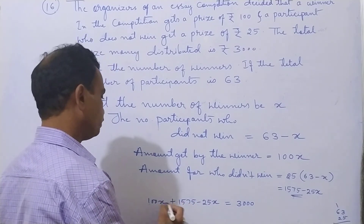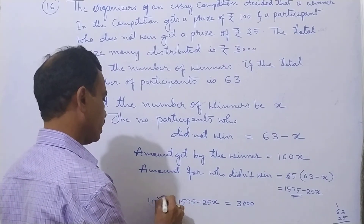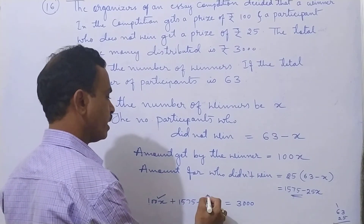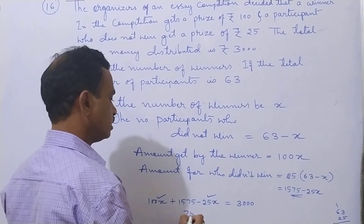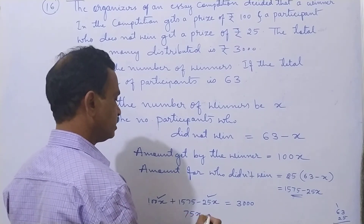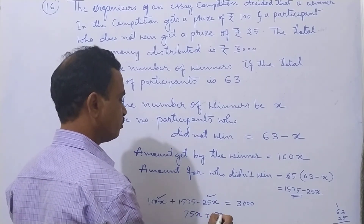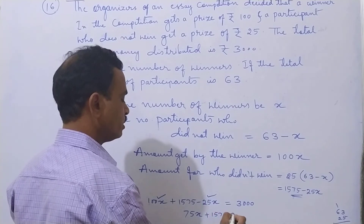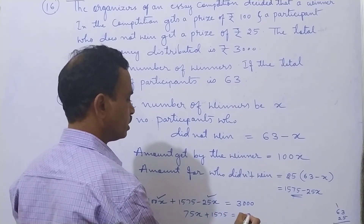Now subtract: 100x minus 25x gives 75x. Then plus 1575 equals 3000.